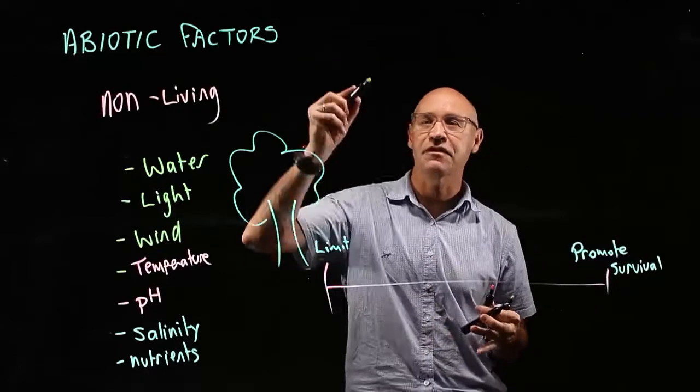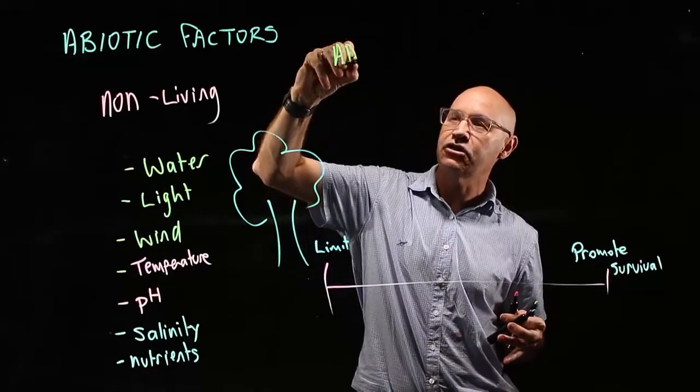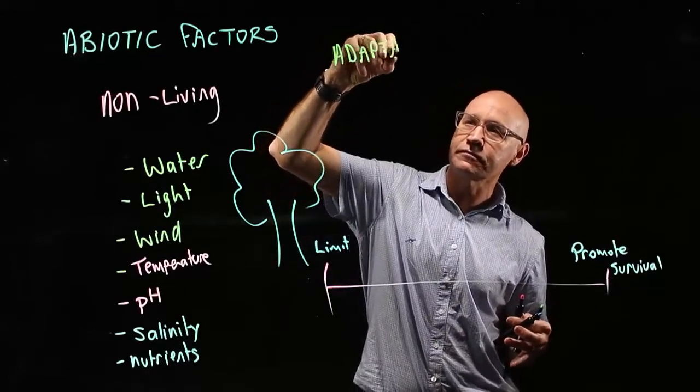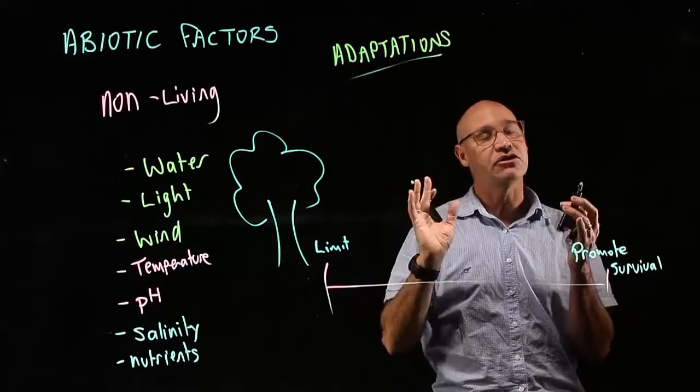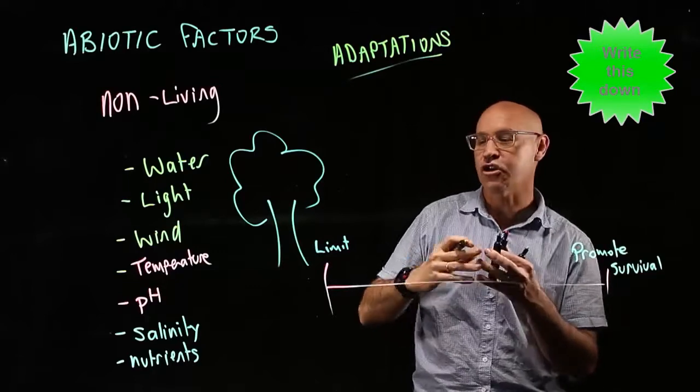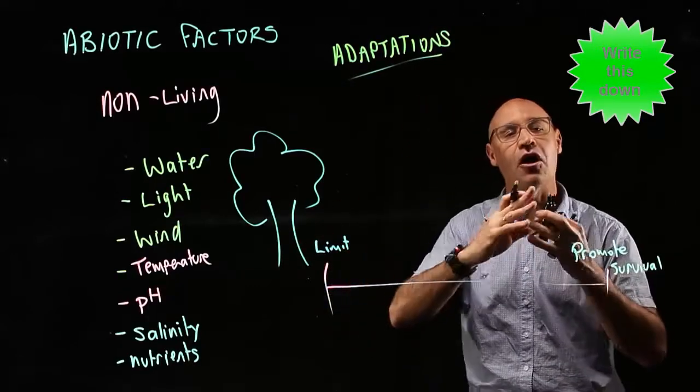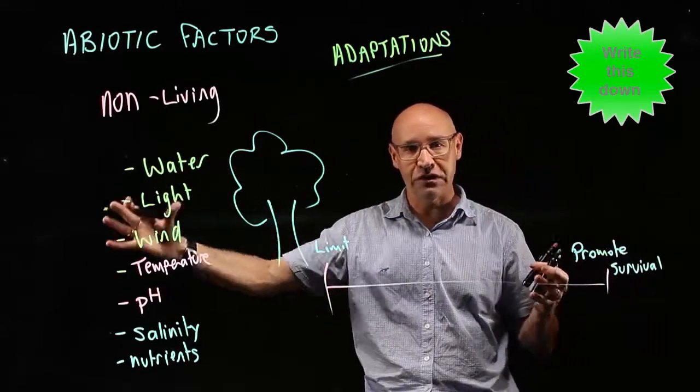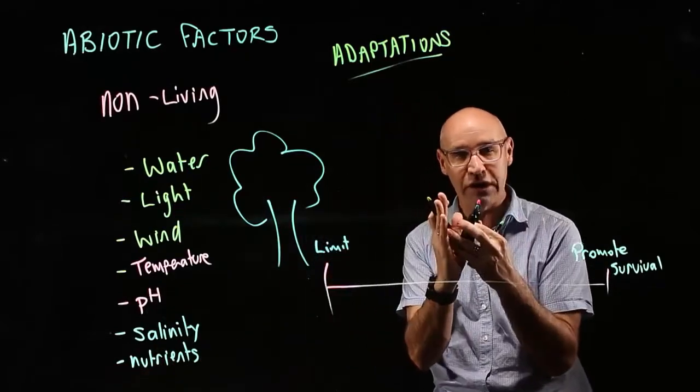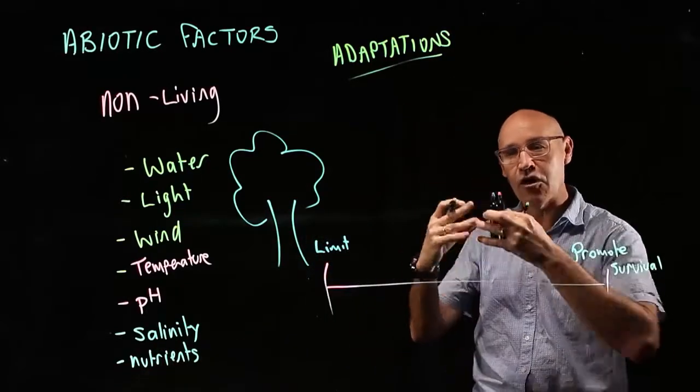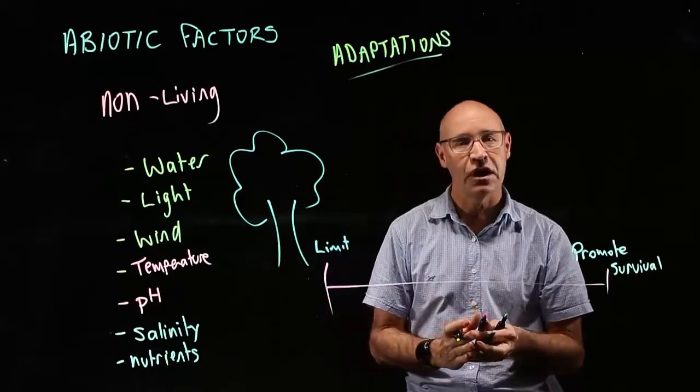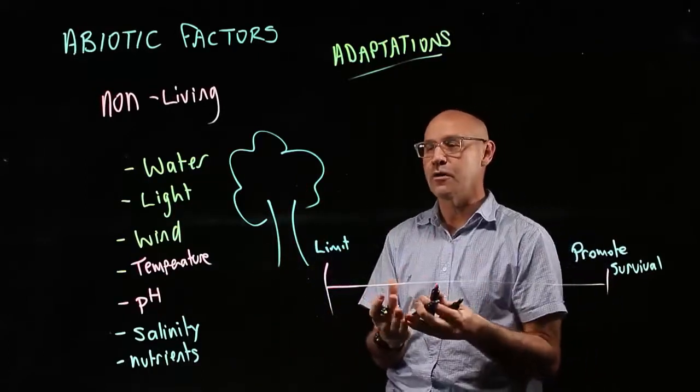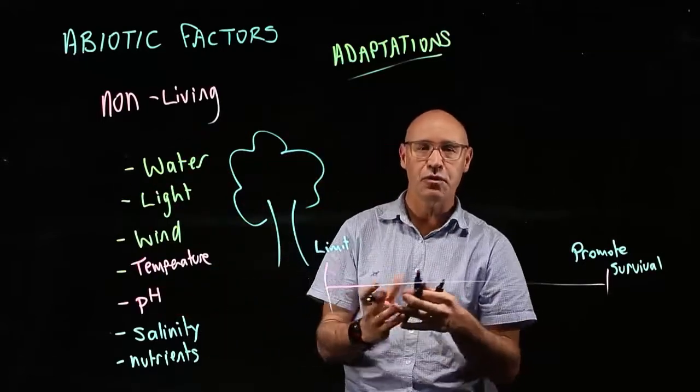What organisms have are these things called adaptations. Adaptations are changes that occur to a species over evolutionary time—not one organism, but the whole species over time changes to be better suited to the environment or the abiotic factors in which it lives.